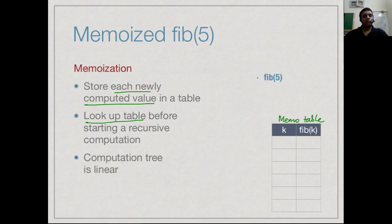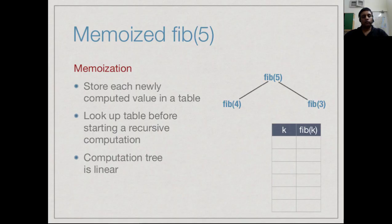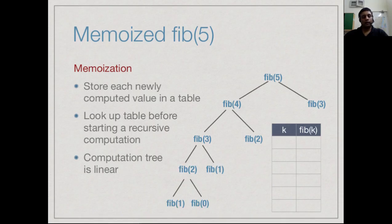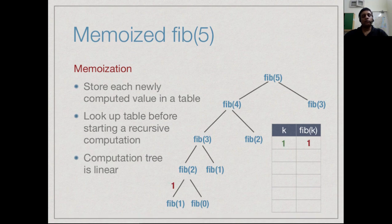Let's start by computing Fibonacci of 5. The recursive definition says we should call Fibonacci of 4 and 3. Going left to right: 4 calls 3 and 2; 3 calls 2 and 1; 2 calls 1 and 0. At this point we try to evaluate Fibonacci of 1 for the first time. We hit a base case — the value is 1 — so we return this value and also store it in the table. Our first table entry: Fibonacci of 1 is 1.